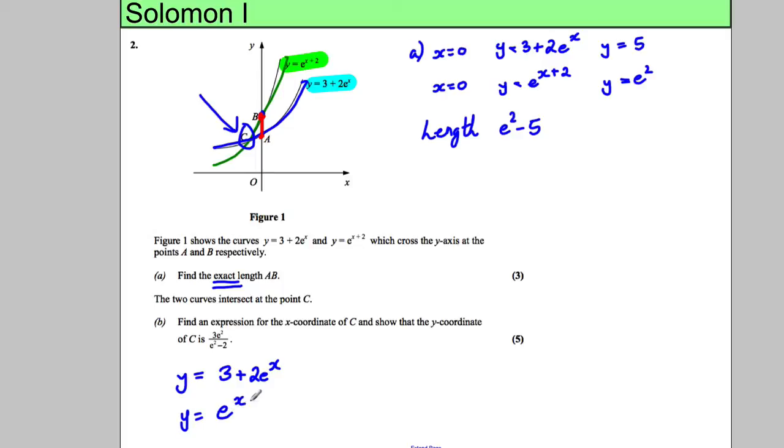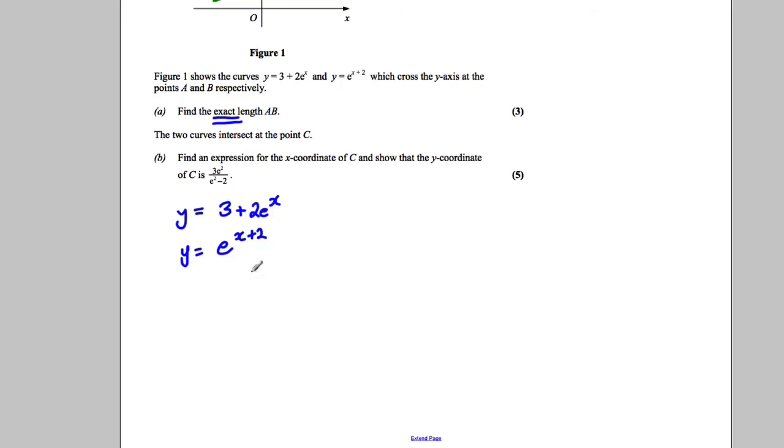Okay what I would do is notice that this equation, this second equation here, I can clearly write that as y equals e^x · e^2 because e^x times e^2 is e^(x+2) when the base is the same. You can add the indices so that's a useful thing to do there.